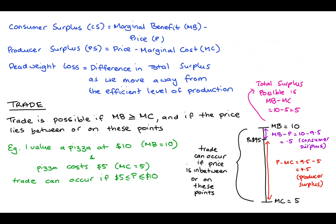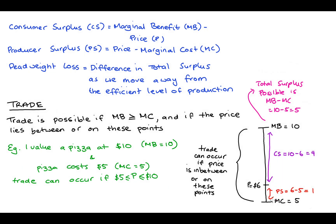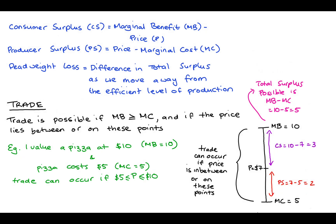The price determines how that total surplus is divided between producers and consumers. The price of $9.50 gave us an outcome where the producer was doing much better than the consumer because the price was pretty high. If the price was lower — maybe $6 — the consumer would get $4 of that possible total surplus and the producers would only get $1. As the price gets higher, more of that total surplus goes to the producer.